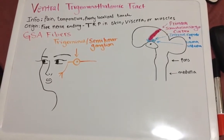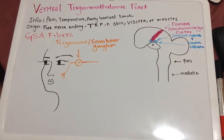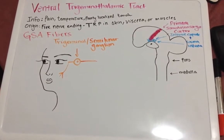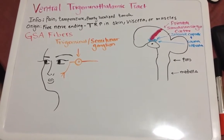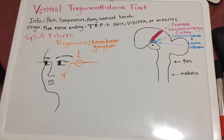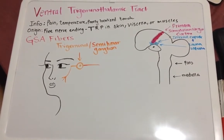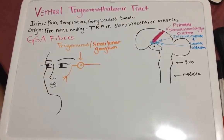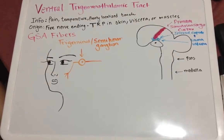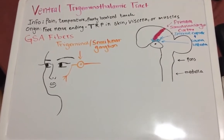The ventral trigeminothalamic tract takes information regarding pain, temperature, and poorly localized touch. Its origin is free nerve endings, and it also includes the TRP or TRIP channel, and skin, viscera, or muscles.